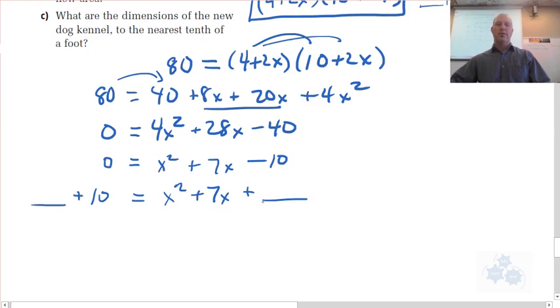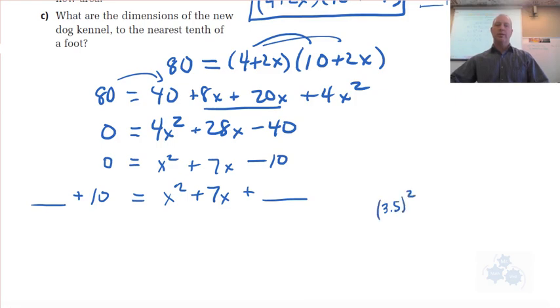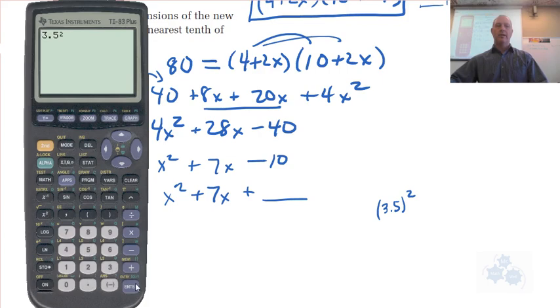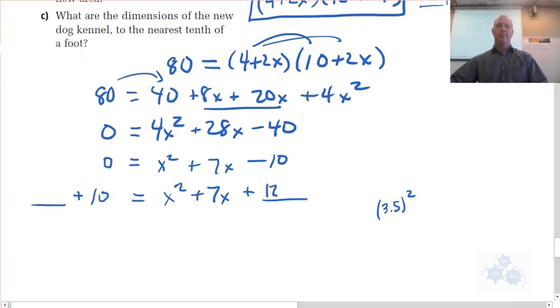and I'm going to add the same amount to the other side as well. Well, so half of 7 is 3.5 squared is... And you can get your calculator out. Decimals are okay here. They said to nearest decimal, right? Tenth of a foot. So 3.5 squared, 12.25. 12.25. So this is where it gets tricky, right? Completing the square to do this because you can't factor this easily.